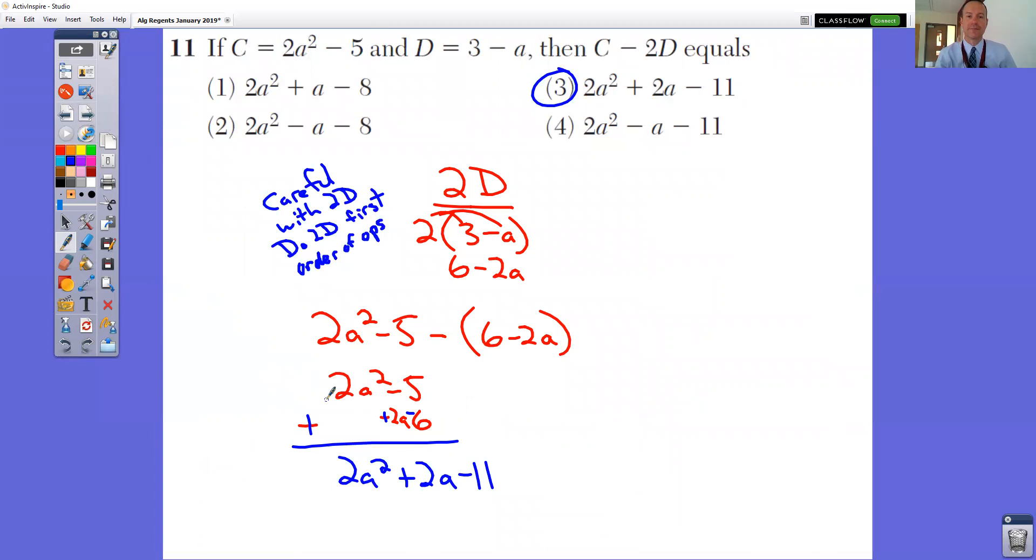In question number 11, you have C, you have D. They want to know what C minus 2D is. Now, 2D, you got to be careful. 2D is two times three minus A inside parentheses. So be very, very careful there. So that is six minus 2A. When you go to do this, this is your C, two A squared minus five minus two times D.